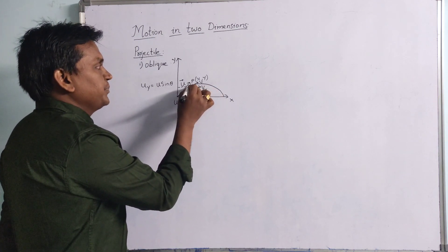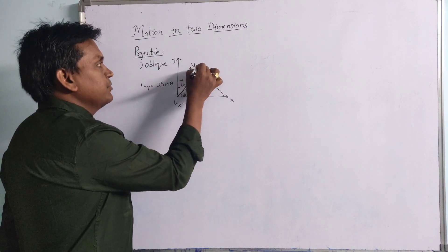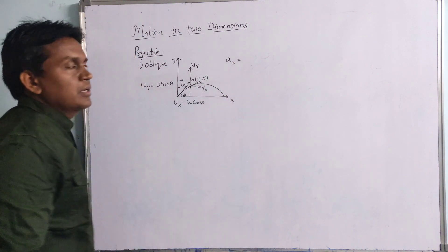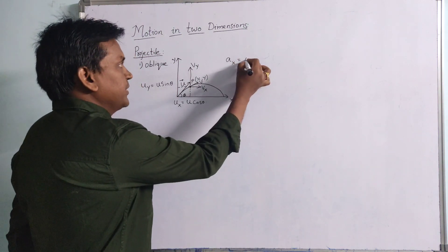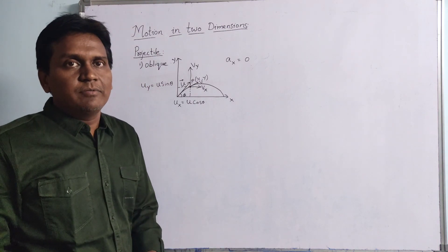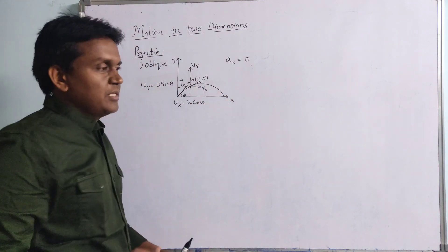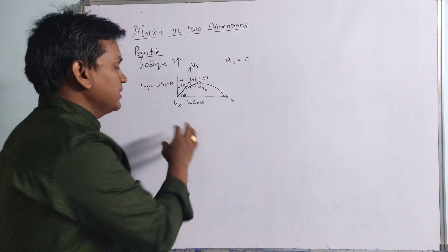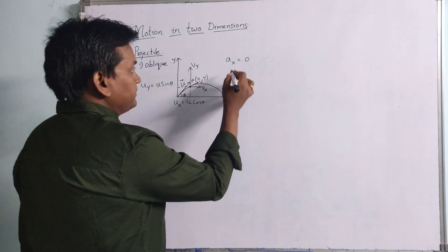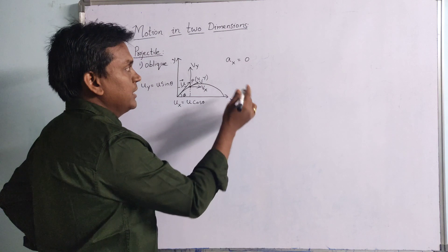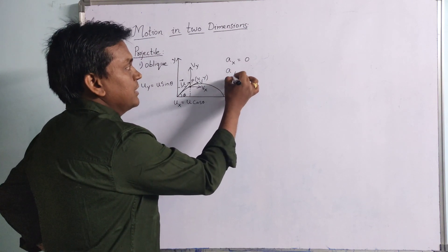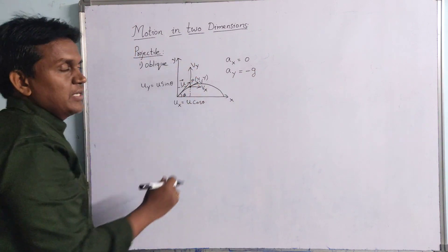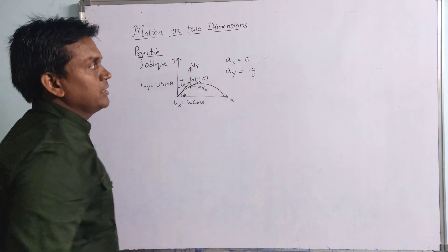Coming to the acceleration of the body: the acceleration along x-axis is 0. There is no acceleration for the body along x-axis, meaning the body is moving with uniform velocity along the x-coordinate. If you consider the y-coordinate, gravity acts vertically downward, so ay equals minus g.